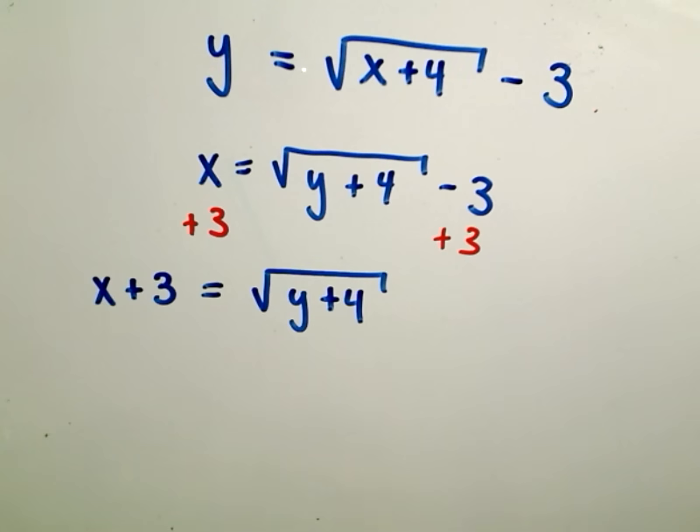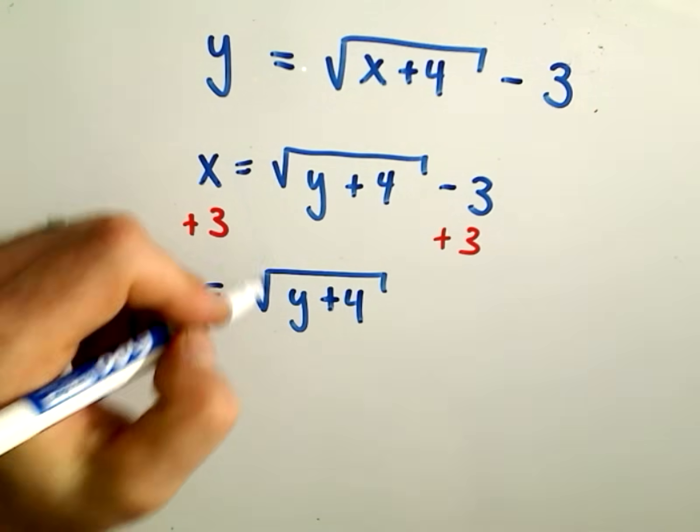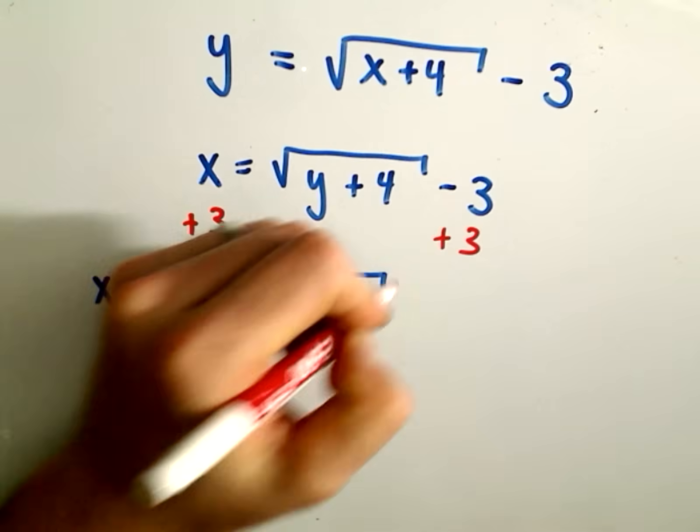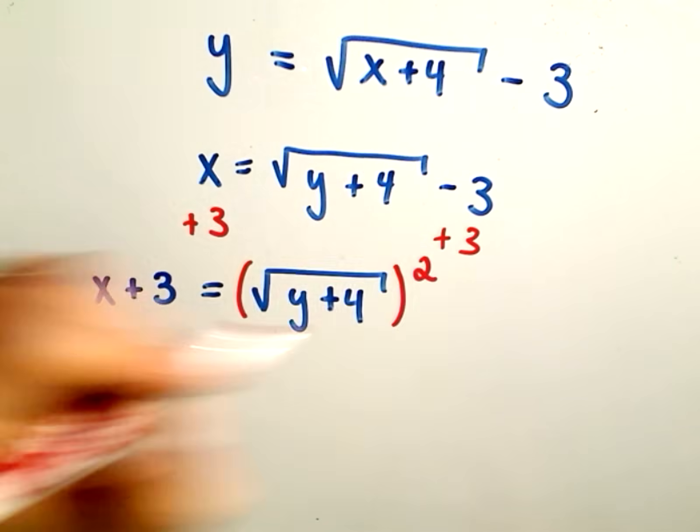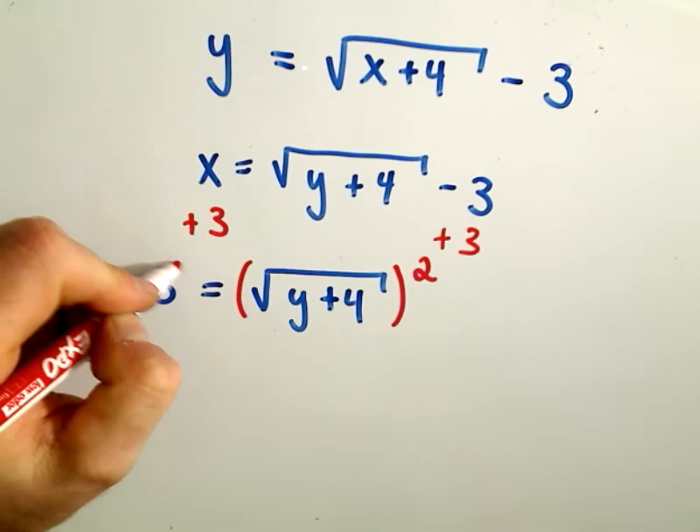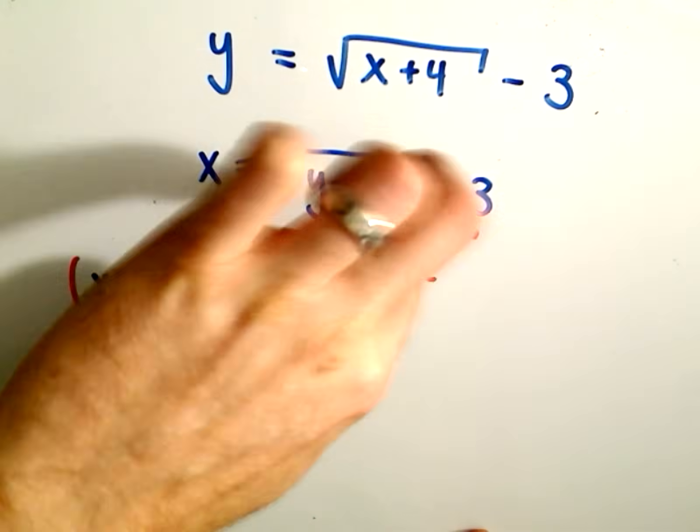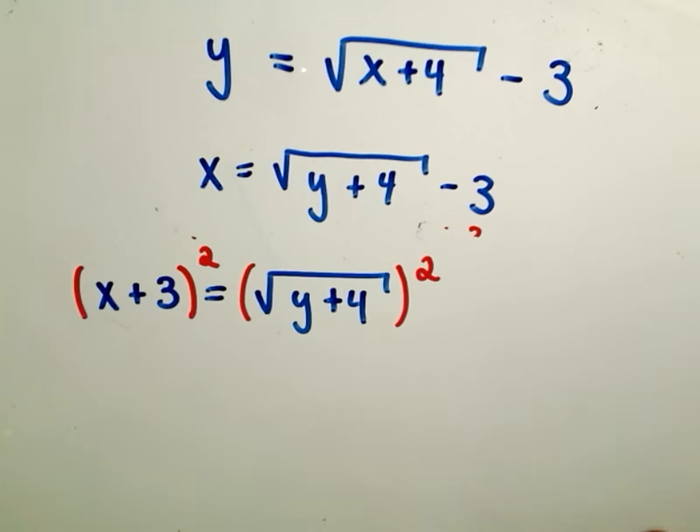So now at this point, to get rid of the square root we'll have to square both sides. So I've got to square the right, which means I've also got to square the left. So be careful at this point.